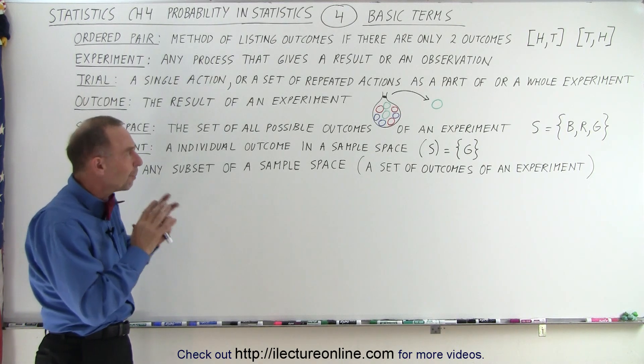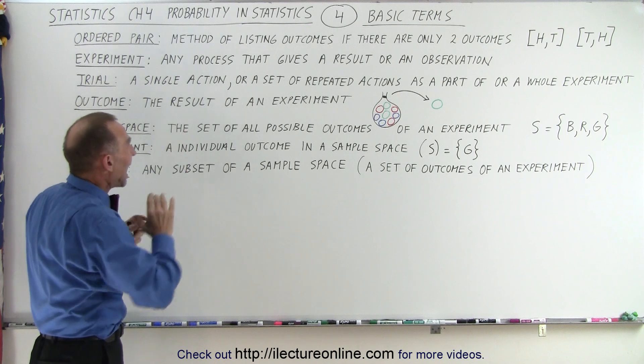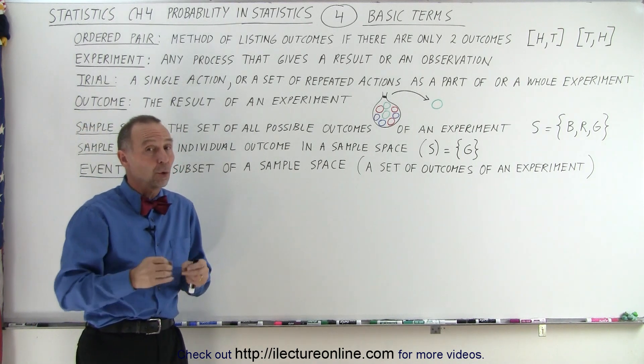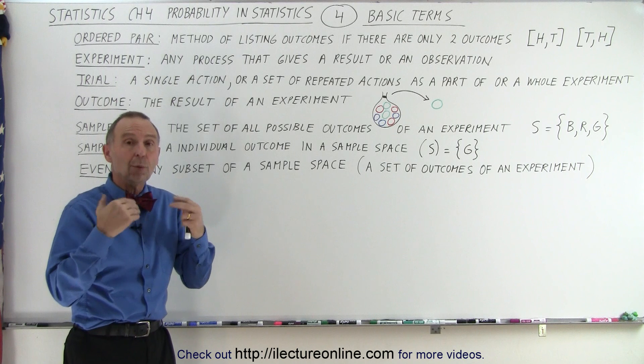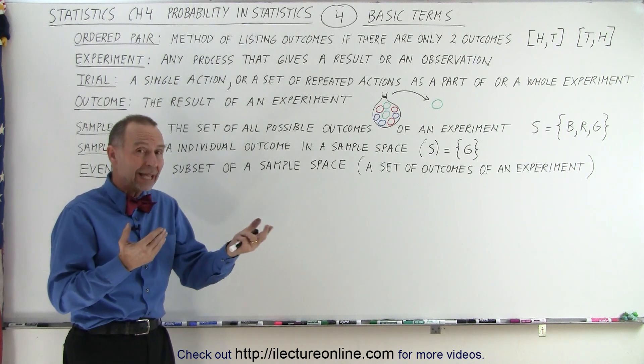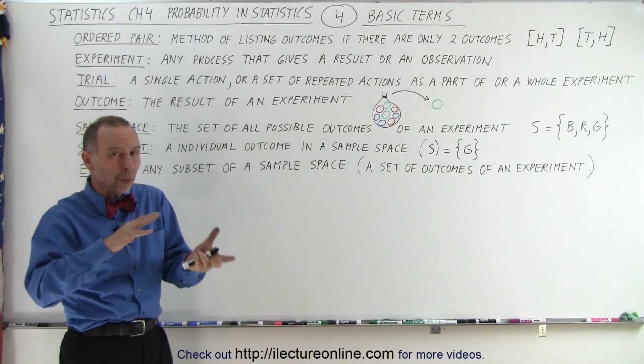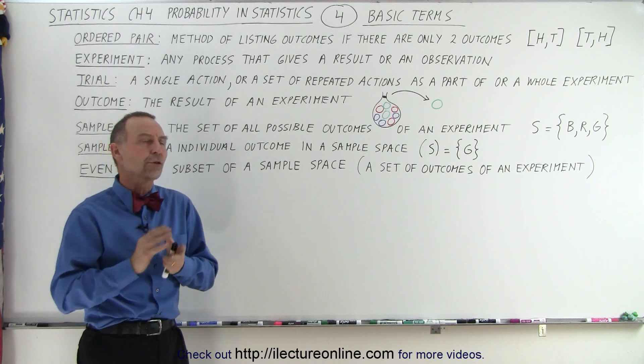And so if there are two possible outcomes, we can list them as an ordered pair. Or if we toss two coins, for example, what will they both be? One of them will be heads, the other one will be tails. Again, then we'll be listing them as ordered pairs.